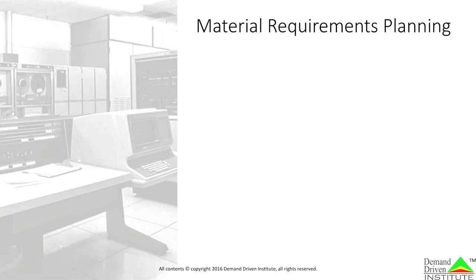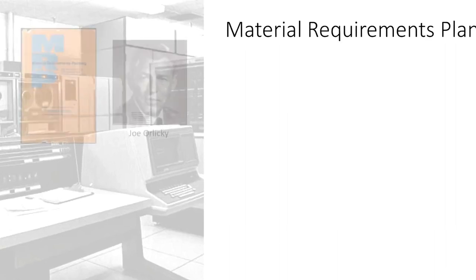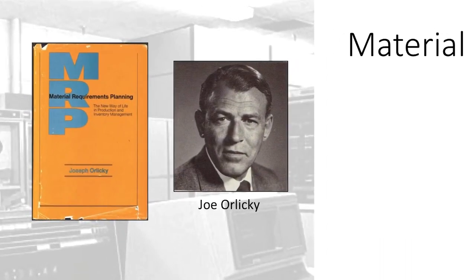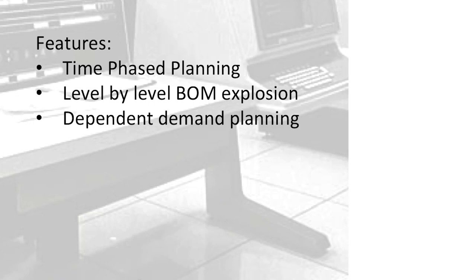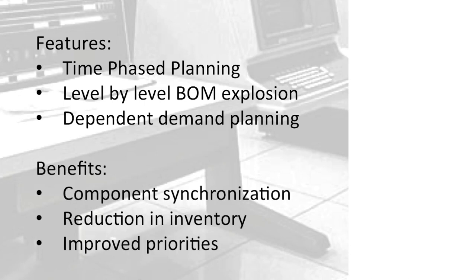The availability of the computer ushered in the era of MRP. Joe Orlicky brought MRP into the mainstream in his 1975 book, Material Requirements Planning, a new way of life for production and inventory management. MRP was a revolution for industry. It featured time-phase planning, level-by-level bill of material explosion, and dependent demand planning. It promised to synchronize all component needs to end item demand, reduce inventory, and improve the ability to prioritize. It changed the way of life in manufacturing.